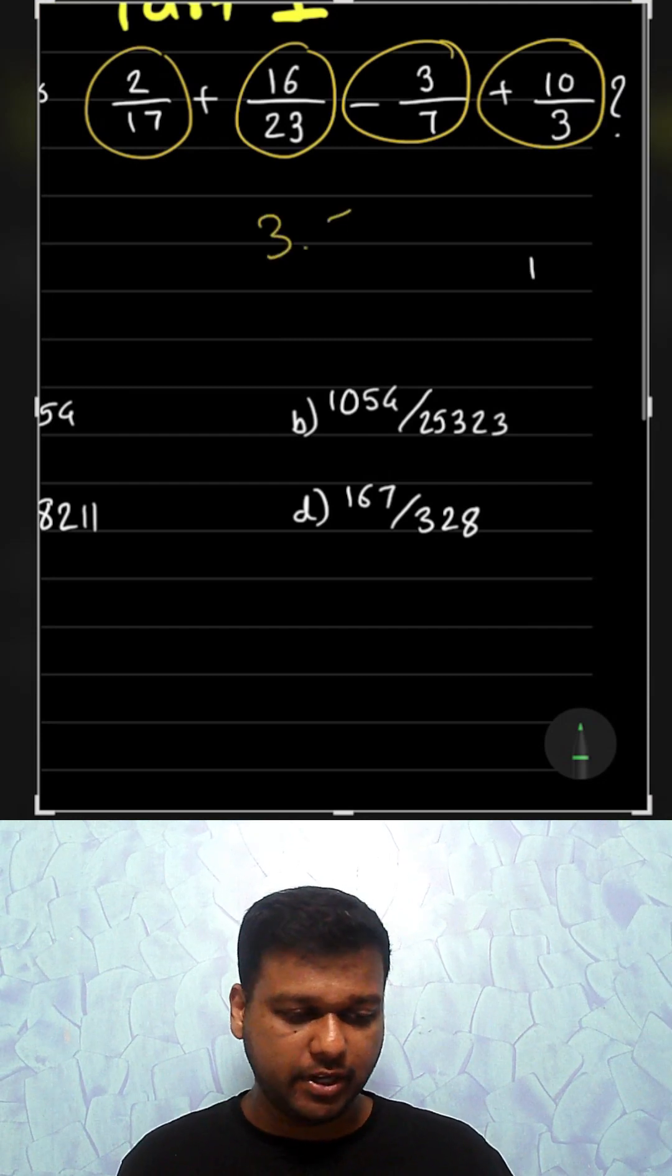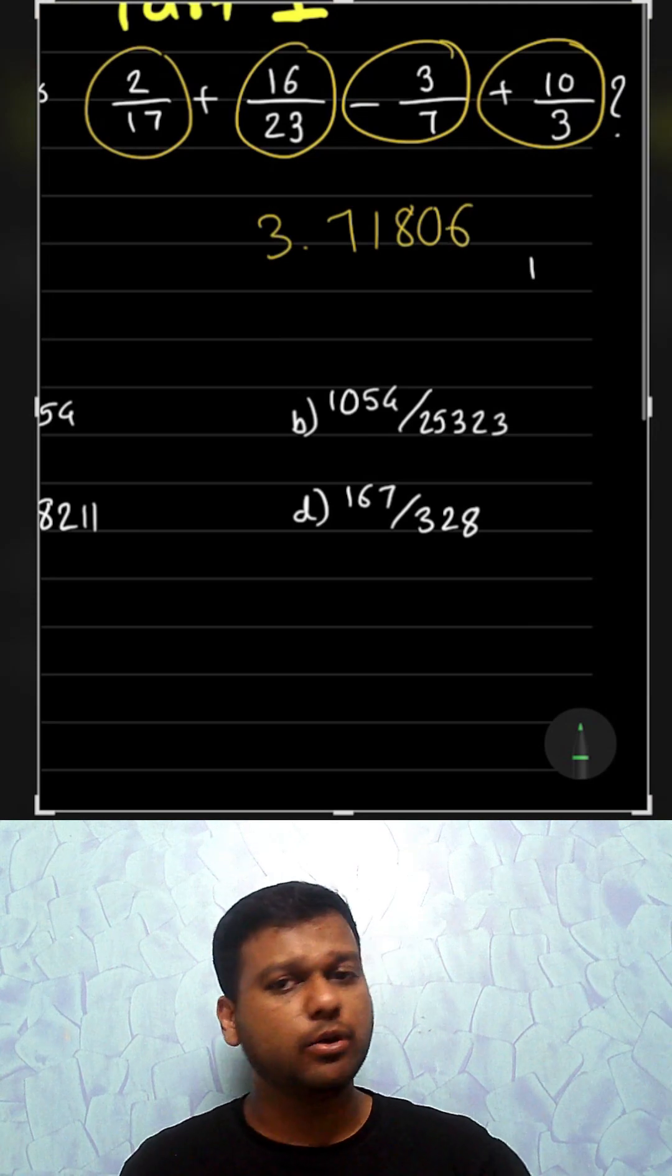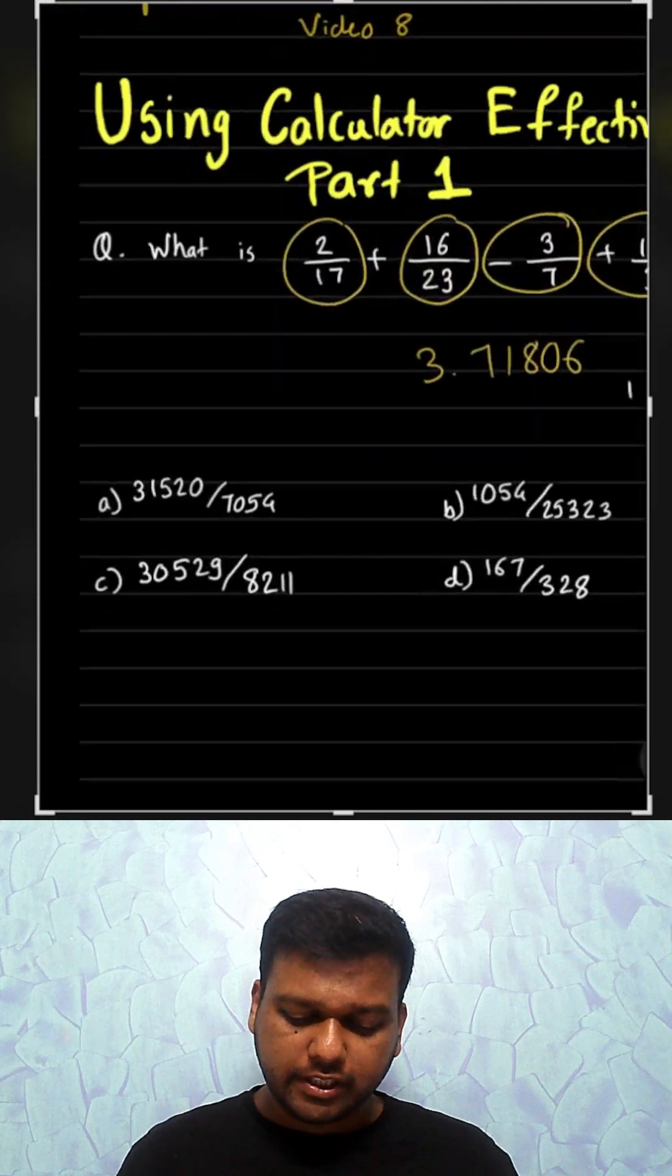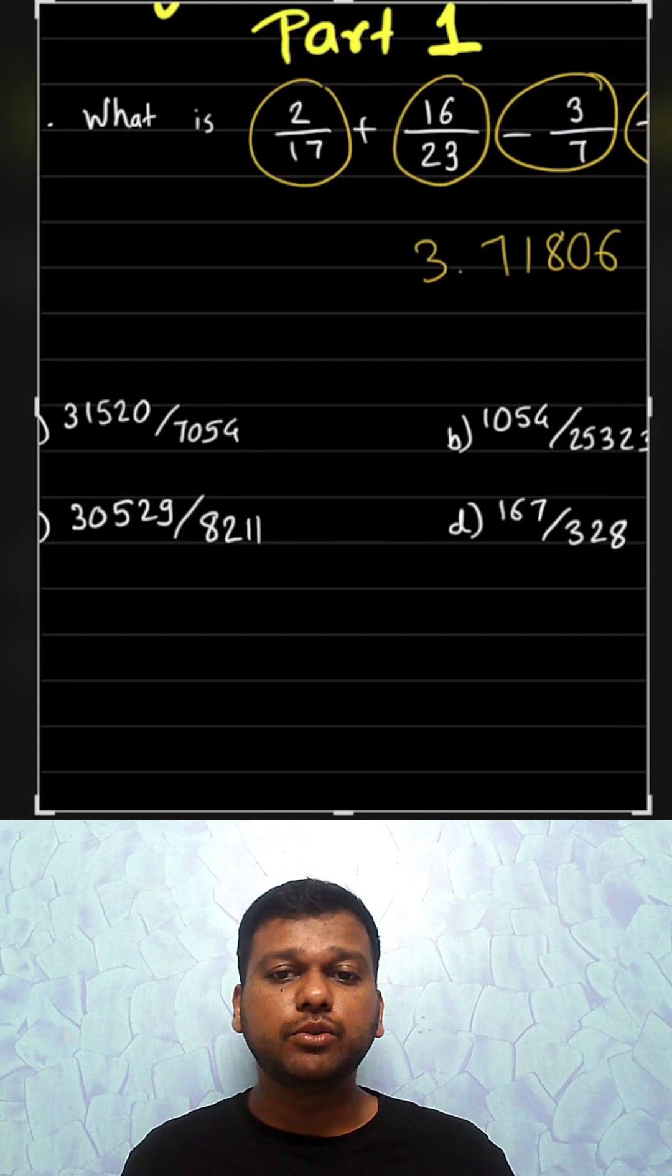Press MRC to get total which is 3.71806. Write it down somewhere. Then just divide all the fractions in the options to check which one gives you this answer.